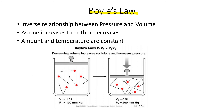Our first gas law is Boyle's law, which deals with the inverse relationship between pressure and volume. When you see 'inverse,' that means opposite — so pressure and volume will have an opposite relationship. As one of those properties increases, the other one will decrease. One goes up, one goes down; one goes down, the other one goes up. In order to see this relationship, amount and temperature are held constant.